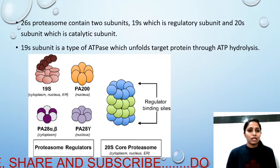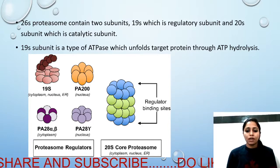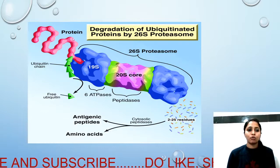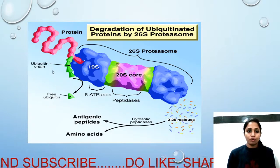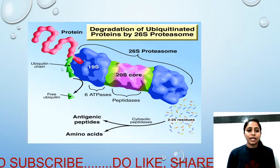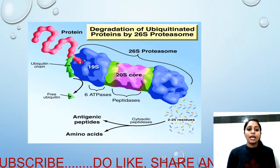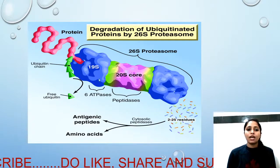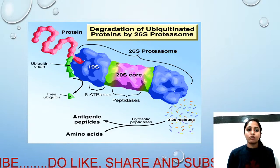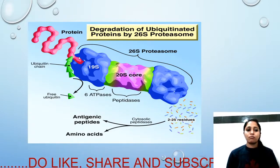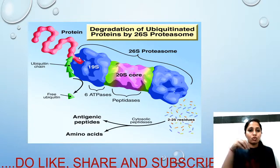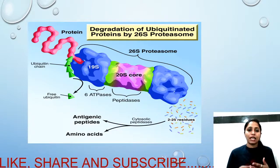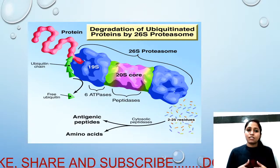The 19S regulatory subunit recognizes the polyubiquitinated protein. This recognition is called polyubiquitination sensing. The 19S subunit contains ATPases that hydrolyze ATP and use that energy to unfold the protein, because the entire proteasome structure requires the protein to be unfolded so that it can easily enter into the 20S catalytic subunit.